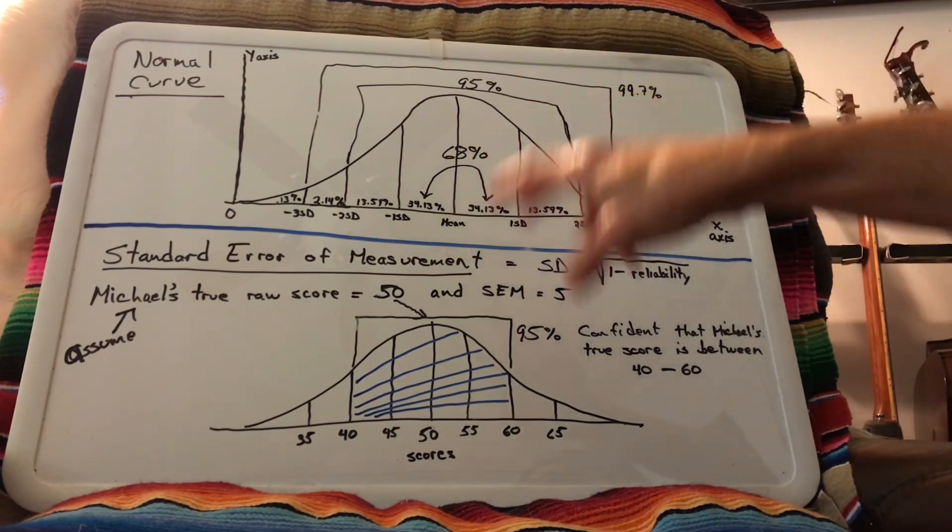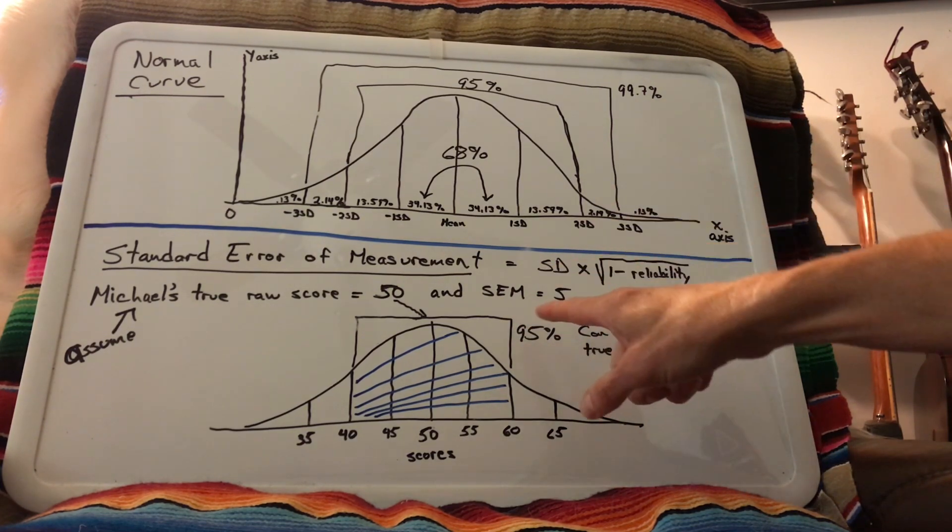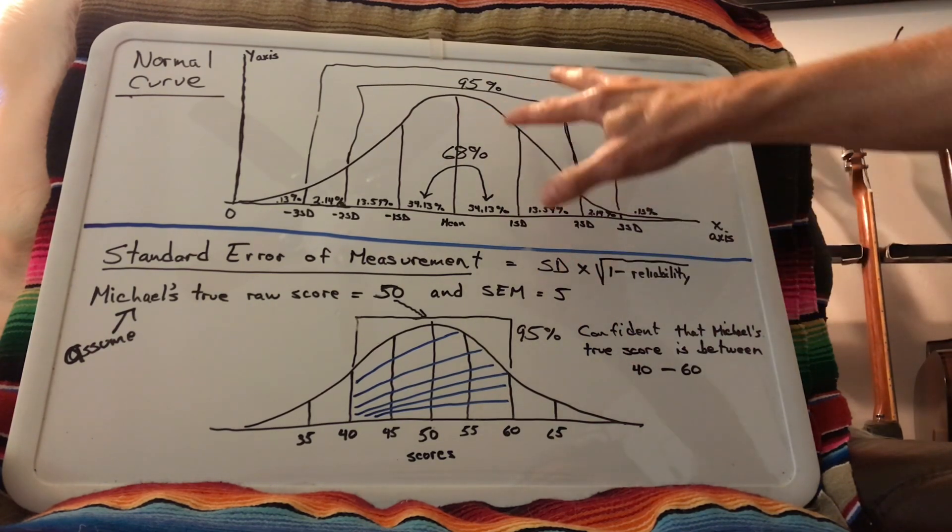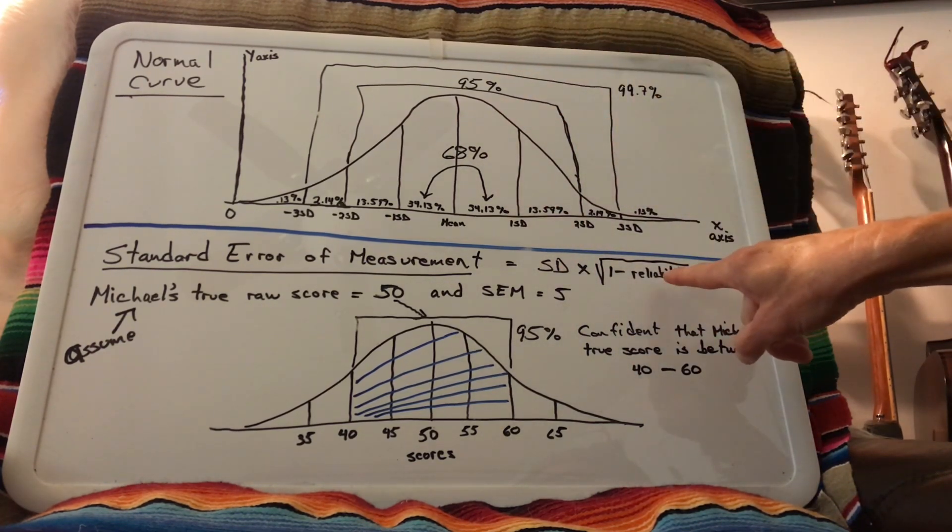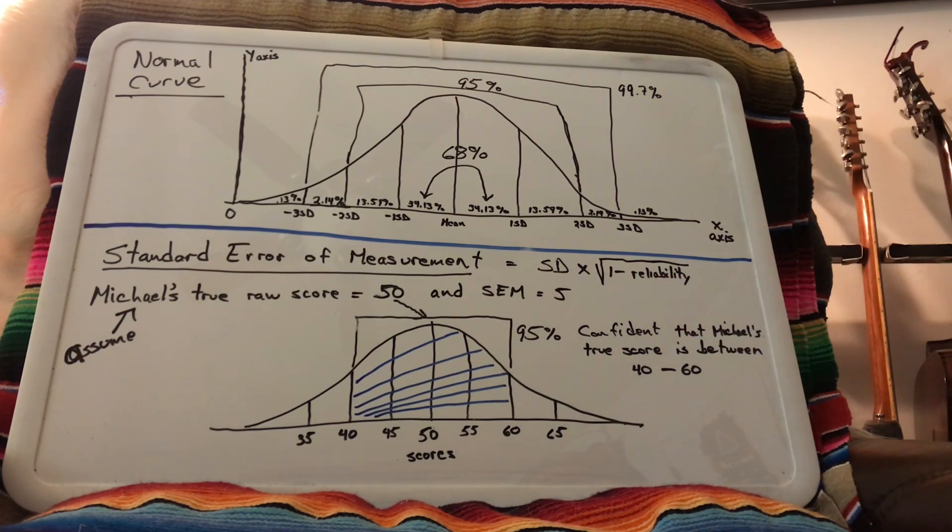We're going to use the same principle as we're talking about standard error of measurement. And the standard error of measurement is calculated using the standard deviation of the test that we can calculate and the reliability coefficient. So it'll be the standard deviation times the square root of one minus the reliability.